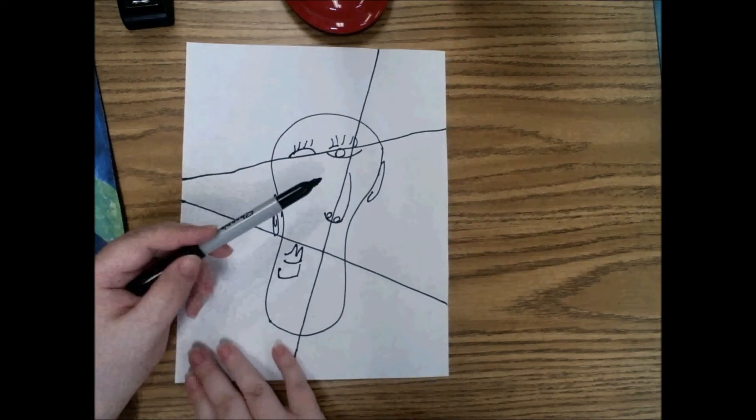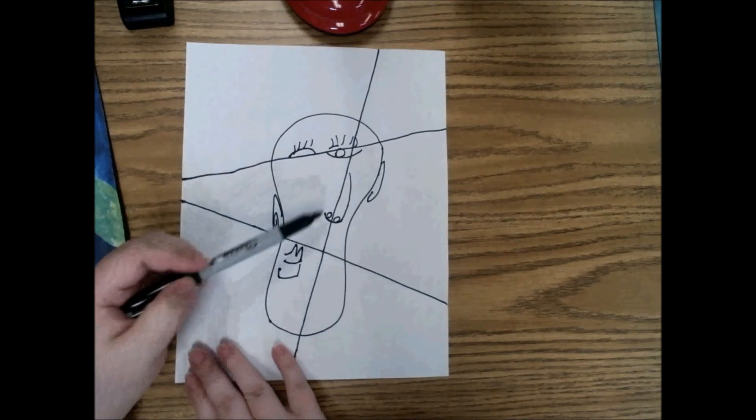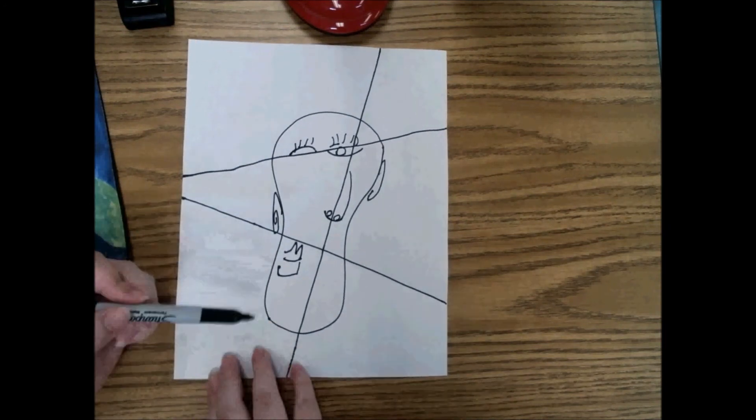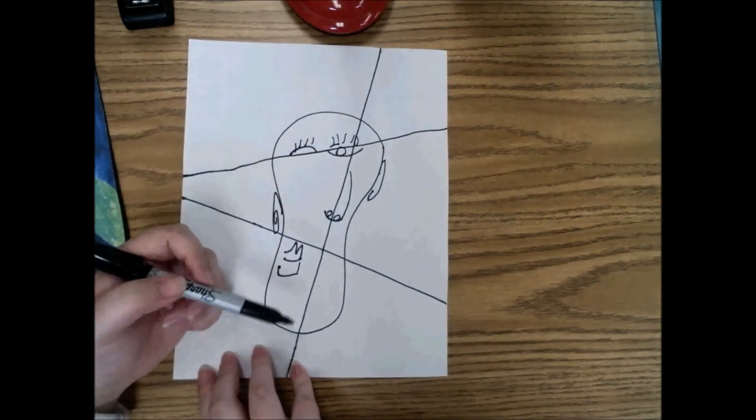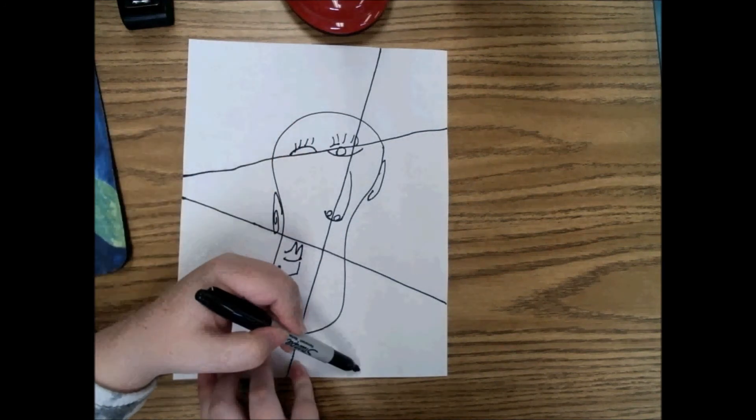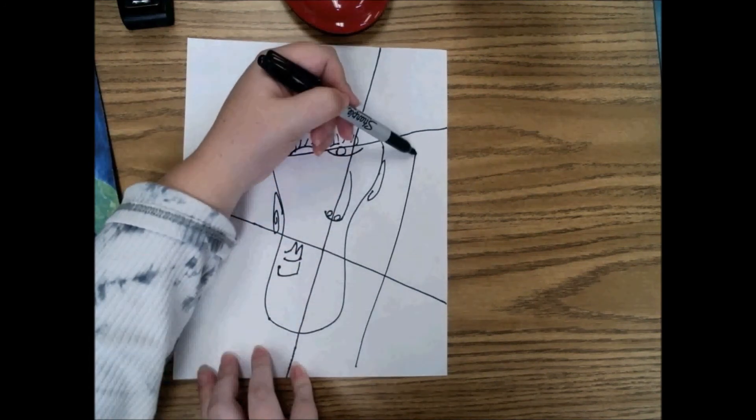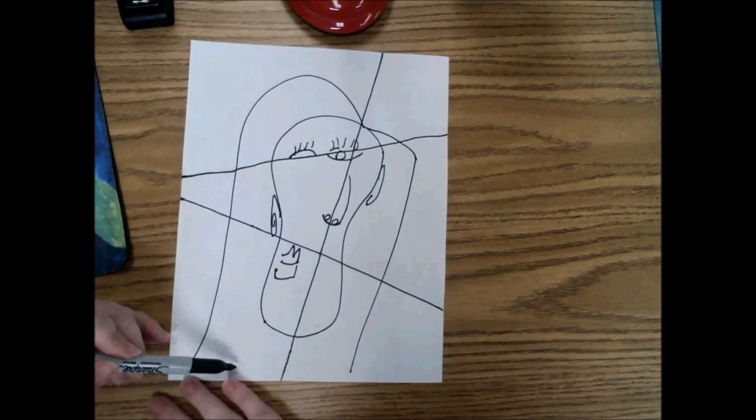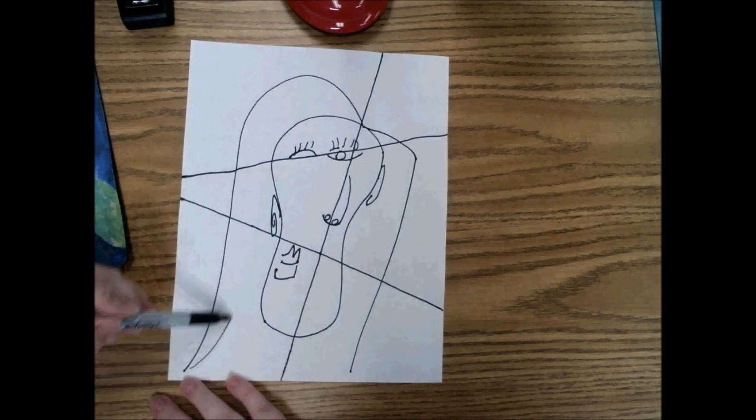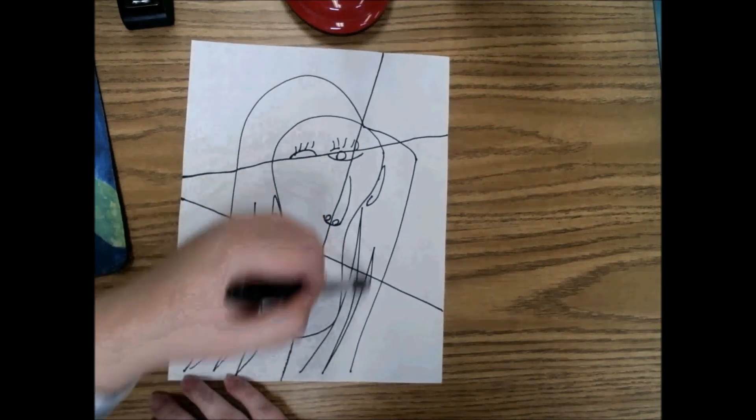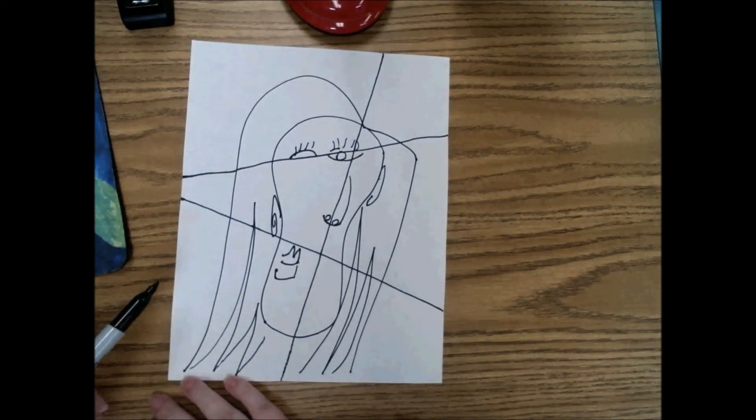So now I have eyes, nose, ears, mouth, most of the major parts of our face. And you can add your hair however you want. That was not on the reference sheet so choose to draw it how you want. I'm going to draw my hair kind of like that. And there's my abstract Picasso portrait.